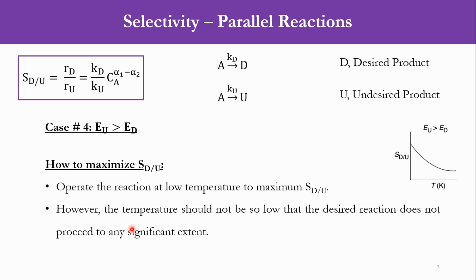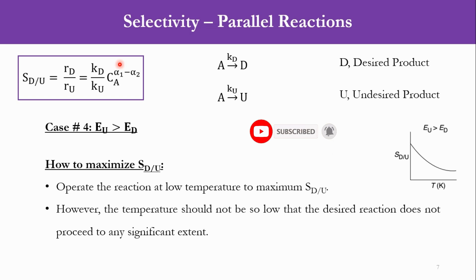This is the overall concept of selectivity for parallel reactions with a single reactant. We first developed a relationship for desired and undesired reactions, then addressed four cases for maximizing selectivity: Case 1 — increase concentration of A, use batch or plug flow reactor; Case 2 — decrease concentration of A, use CSTR; Case 3 — keep temperature high because E_D is greater than E_U; Case 4 — keep temperature low, but not so low that the reaction does not proceed. We will use these concepts in the coming lecture dealing with multiple reactants.